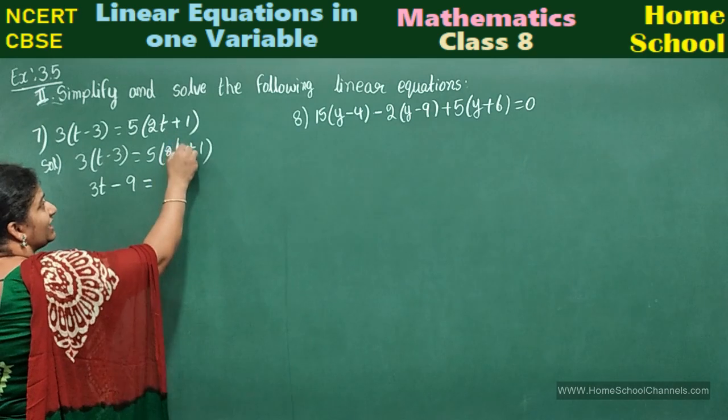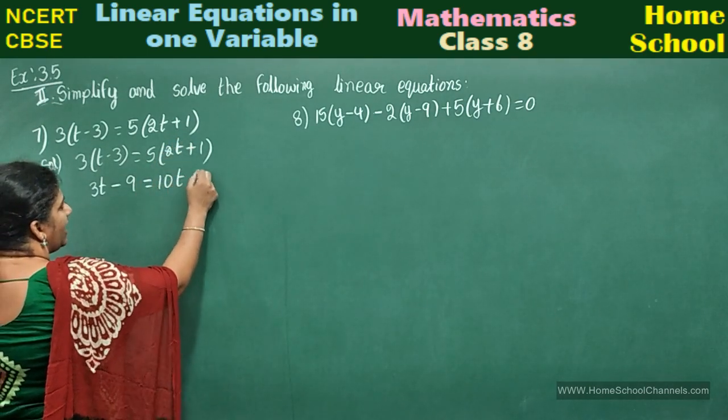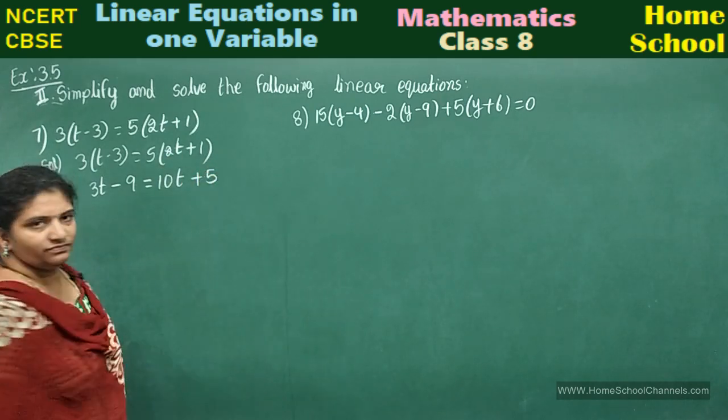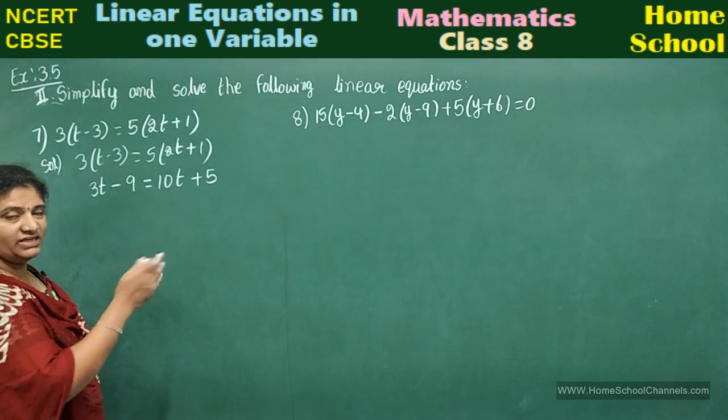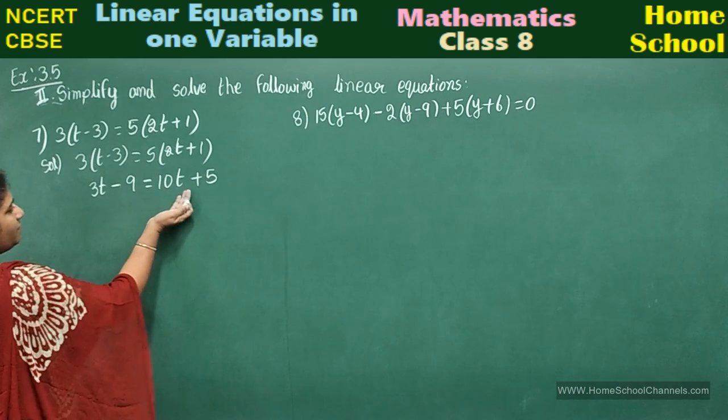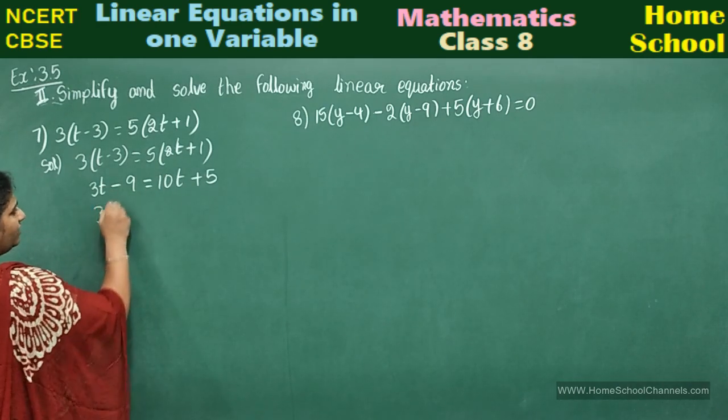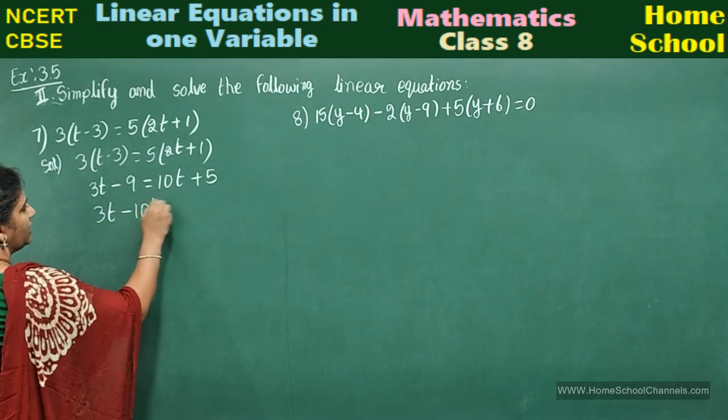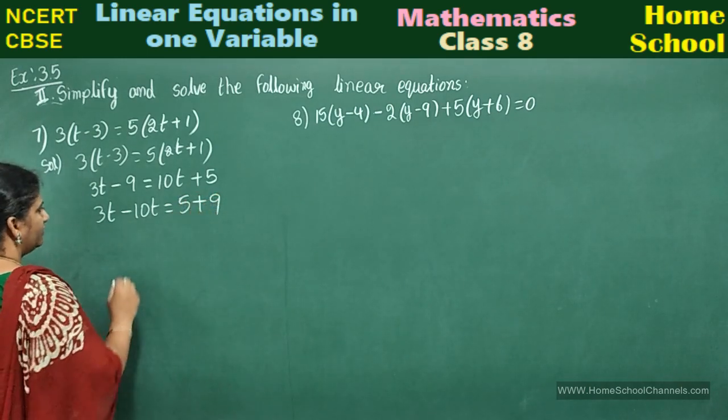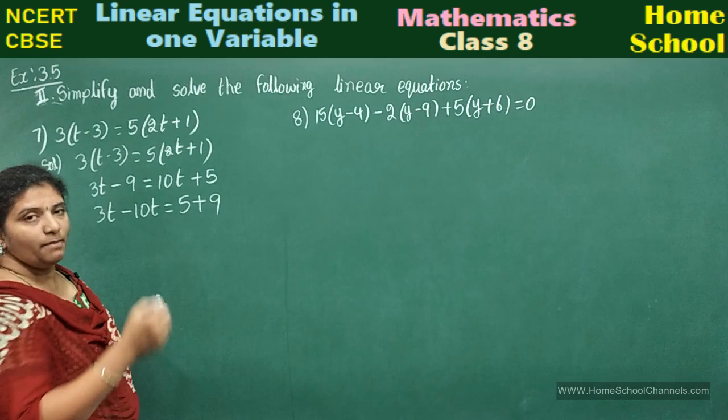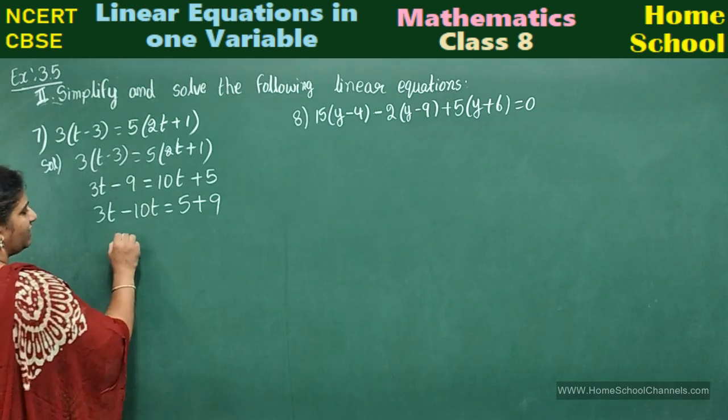This is equal to 5 into 2t: 10t plus 5. Now bring t's on one side—variable on one side and number on one side. Bring this 10t to this side, that means transpose plus becomes minus. If it comes minus 9 plus 9. By transposing, I got the step. 3t minus 10t will be minus 7t.